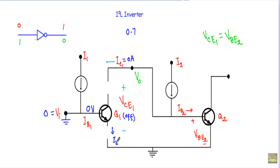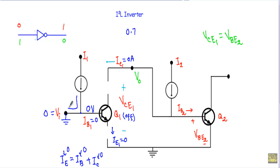Since collector current IC1 is 0, there will be no emitter current IE. From IE = IB + IC, with IC = 0 and IE = 0, the base current IB1 is also 0. Therefore the current injected by current source I1 at this terminal will flow through the path toward Q2's base — this path acts as a current sink for I1. Since IC1 equals 0, the current injected at the base terminal of transistor Q2 means IB2 will be equal to I2, so transistor Q2 will be in the on state or saturation.